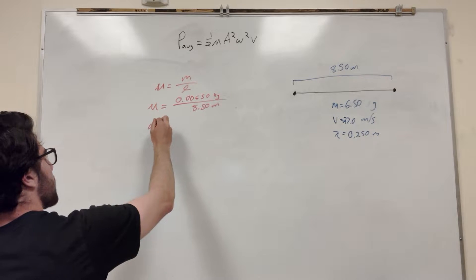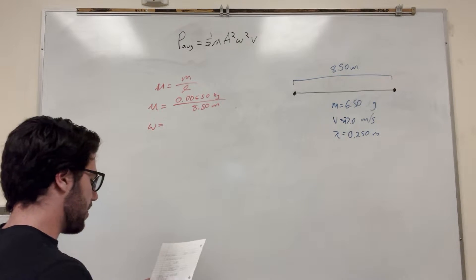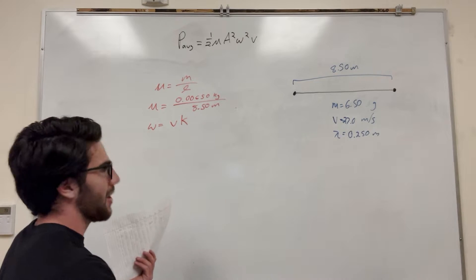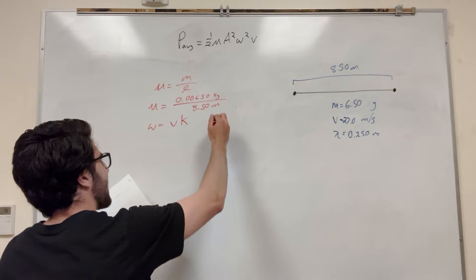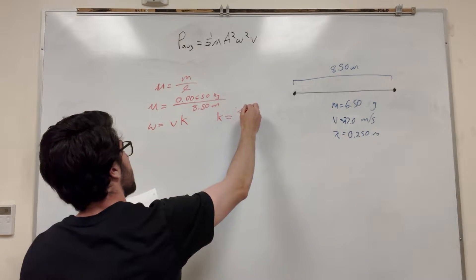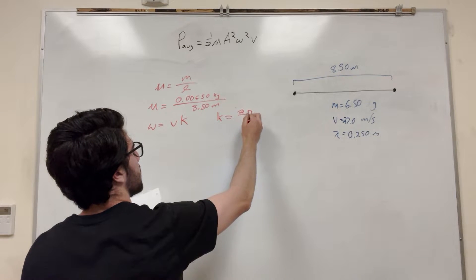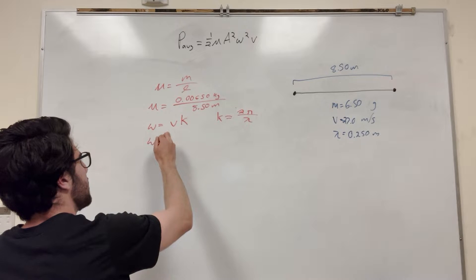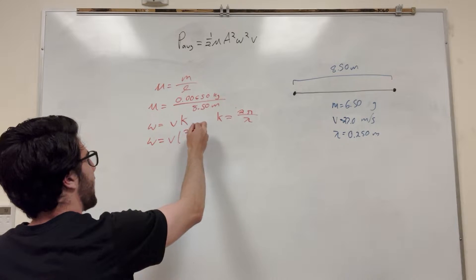Next, we need W, our angular frequency. So W is equal to the velocity times the K value. We don't have the K value, so let's find the K value. K is equal to 2 pi over the wavelength. So let's plug this right into here. So W is equal to V times 2 pi over lambda.